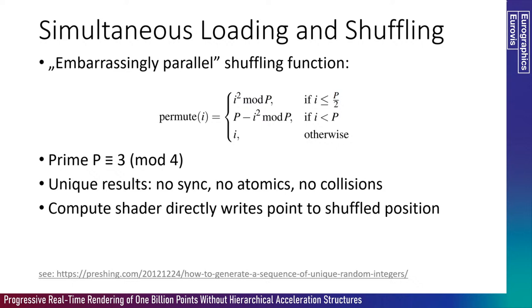How do we render these random points? We shuffle the vertex buffer, and with a shuffled vertex buffer, all we have to do is render subsets of it to render a selection of random points. Shuffling is a huge part of our method and has to be very fast. To make it fast, we use a permutation function that takes a prime congruent to 3 mod 4 and creates a permutation of numbers between 0 and that prime. We find a prime very close to the number of points and permute our point cloud using this function. Importantly, it has no collisions and doesn't depend on previous states, so we can apply it to all points at once with no syncing, no atomics. We do this directly in a compute shader on the GPU.